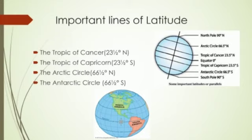The second important parallel is in the Northern Hemisphere. The Tropic of Cancer is situated at 23 and a half degrees North. The Tropic of Capricorn in the Southern Hemisphere is at 23 and a half degrees South. And again in the Northern Hemisphere, the Arctic Circle is at 66 and a half degrees North. And in the Southern Hemisphere, the Antarctic Circle is at 66 and a half degrees South.